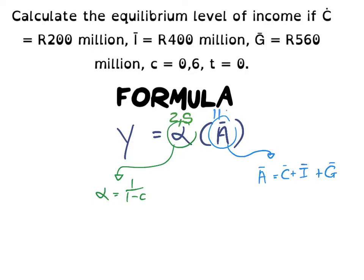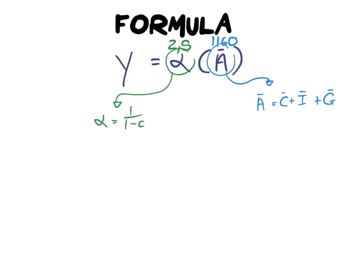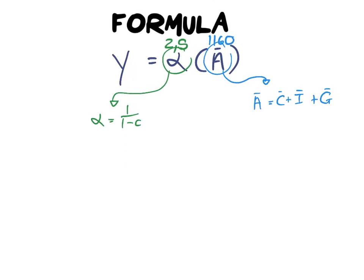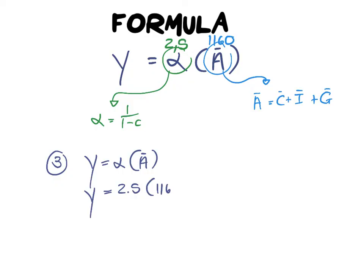Now step three: we plug our calculated values into the original formula. Alpha is 2.5 and A-cap is equal to 1,160. Y is equal to alpha times autonomous spending, so 2.5 multiplied by 1,160 gives us our final value for the equilibrium level of income, equal to 2,900 million rand.